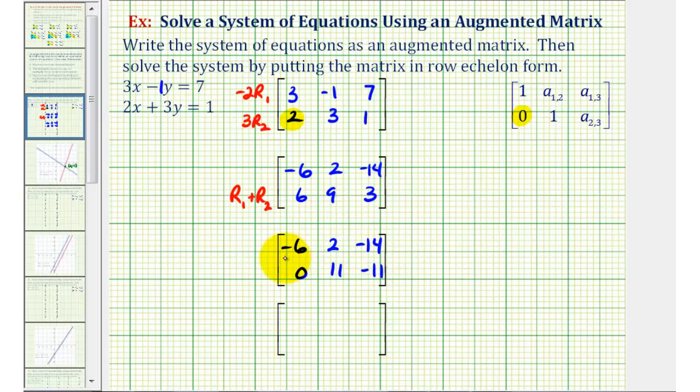Now that we have the zero in the correct position, now we need to make sure that the first element in each row is positive one. Which means to get a one here, we'll multiply row one by negative one-sixth. And to get a one here, we'll multiply row two by one-eleventh.